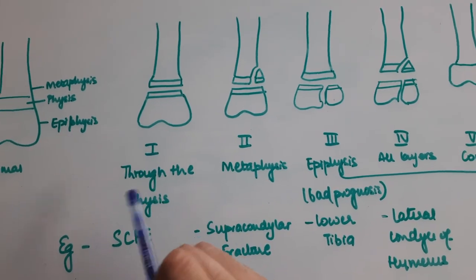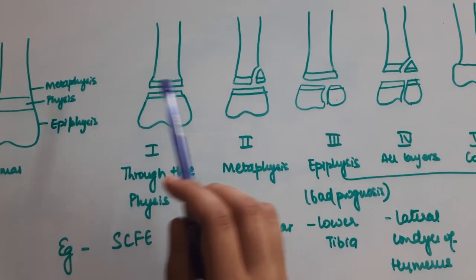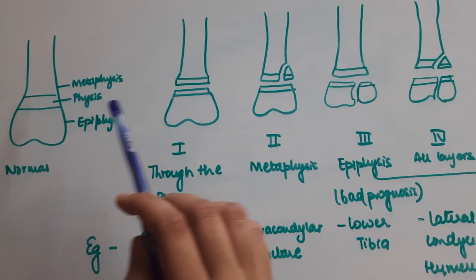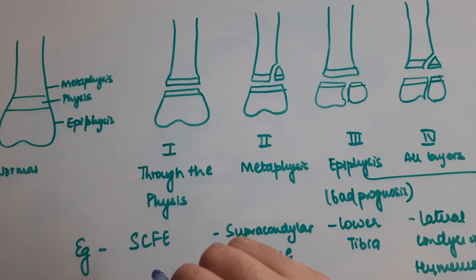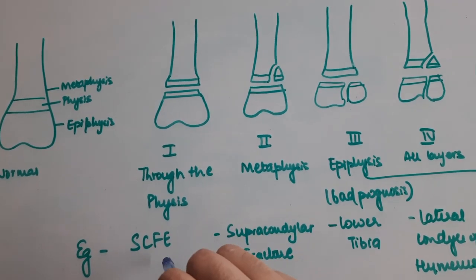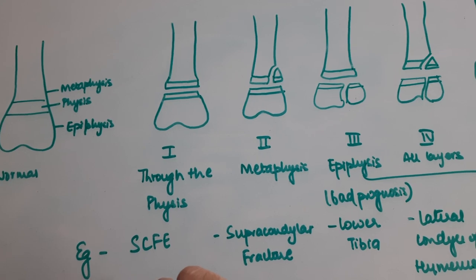In the first type, the fracture line goes through the physis, which means if you see this normal physial plate, the fracture line will completely go through the physis. An example of this kind of classification is slipped capital femoral epiphysis.